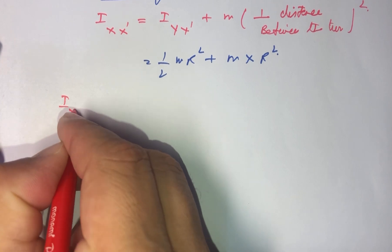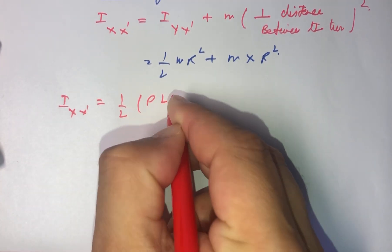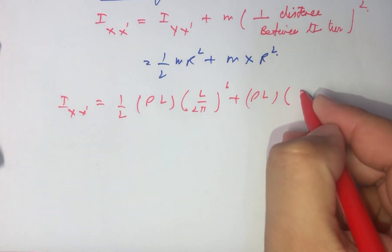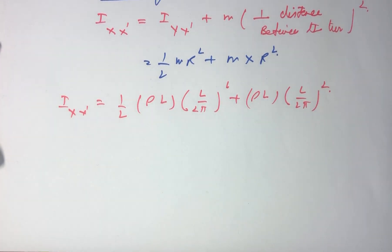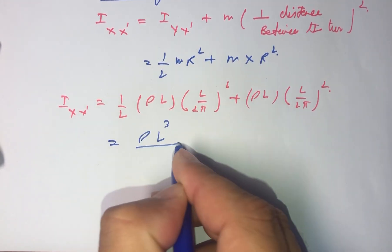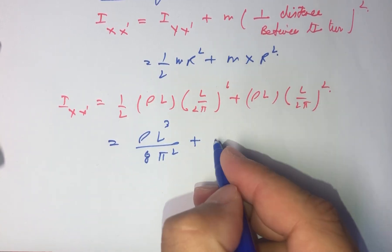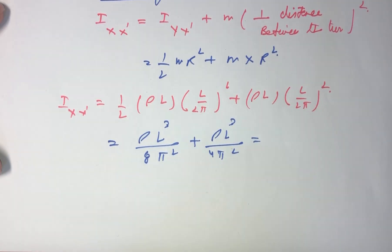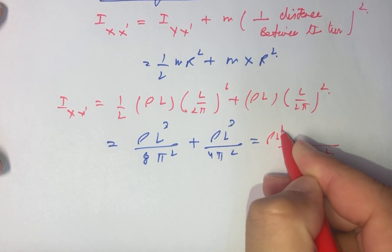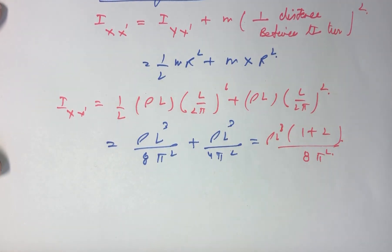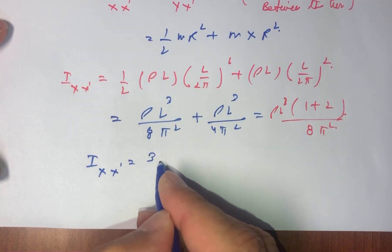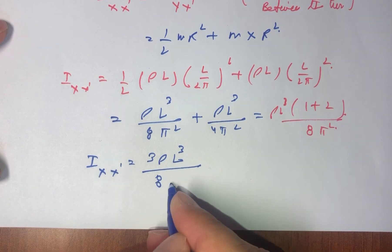So I_xx' will be equal to ½ × (rho·l) × (l/2π)² + (rho·l) × (l/2π)². This gives rho·l³ / 8π² plus rho·l³ / 4π². Taking LCM as 8π² and rho·l³ as common, we get 1 + 2 = 3, so the result is 3·rho·l³ / 8π².